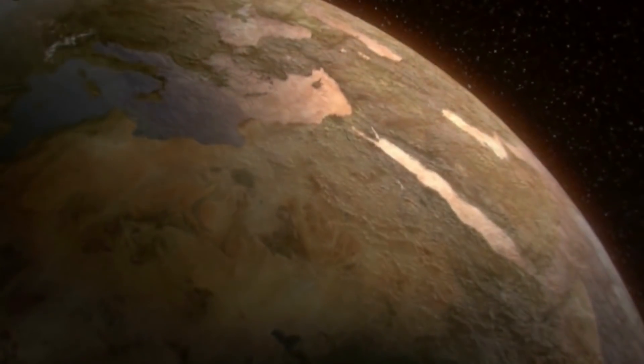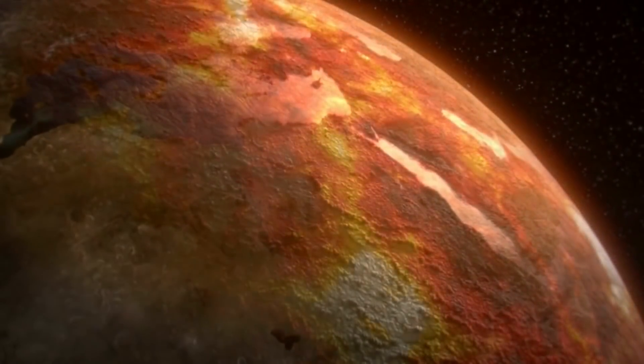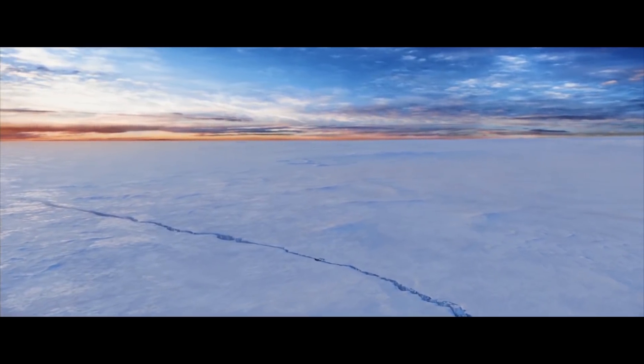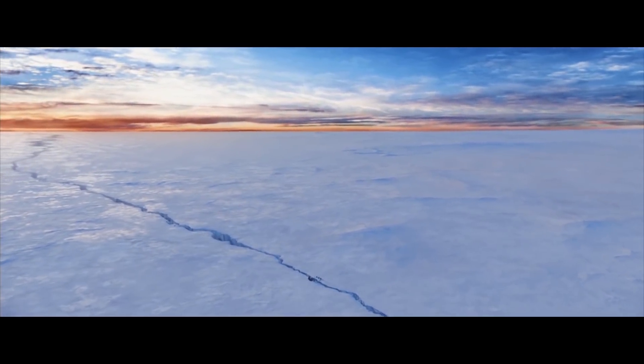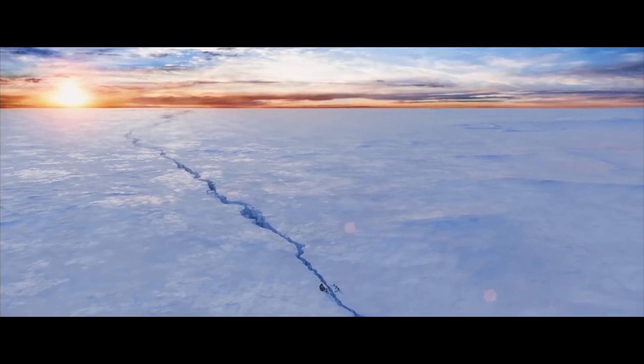During Earth's closest approach to the Sun, temperatures would increase immensely, while during its farthest distance, temperatures would plummet far below what we now experience in winter.